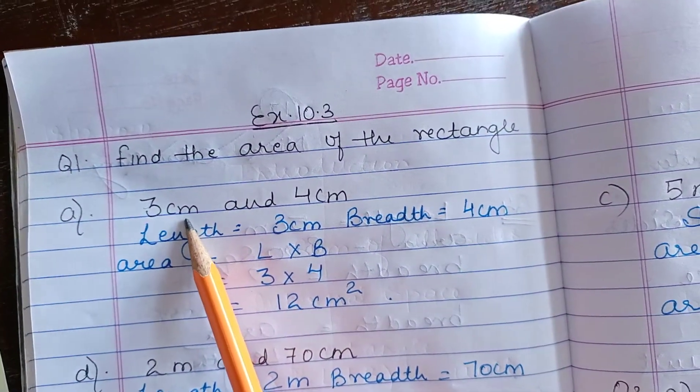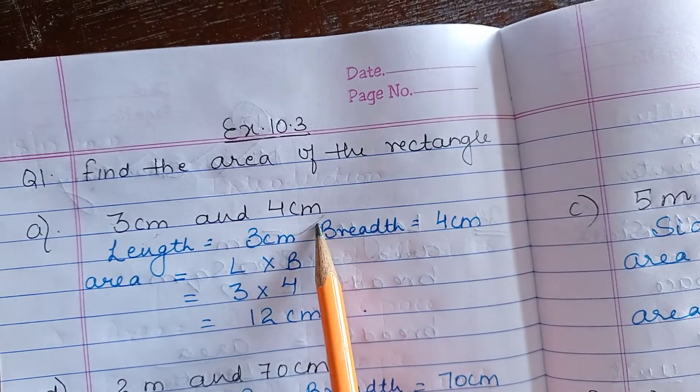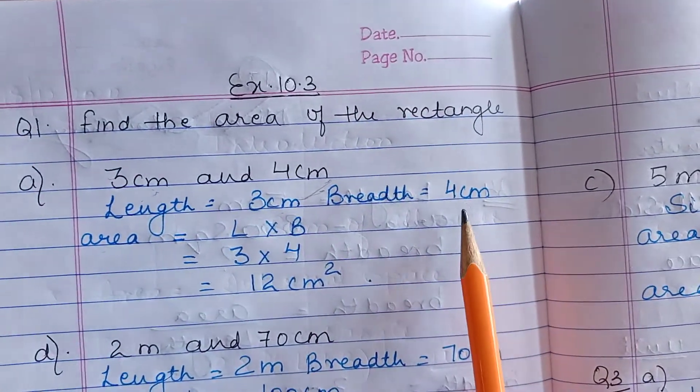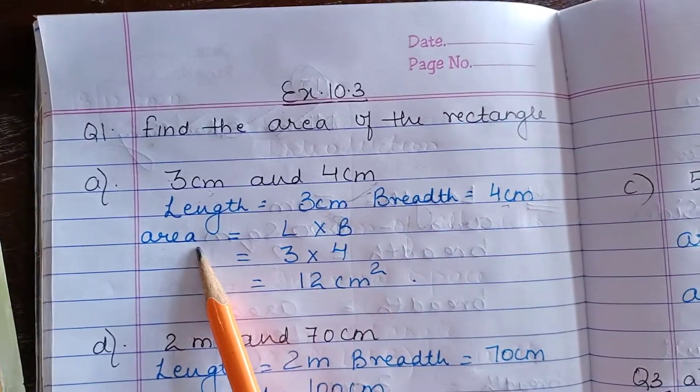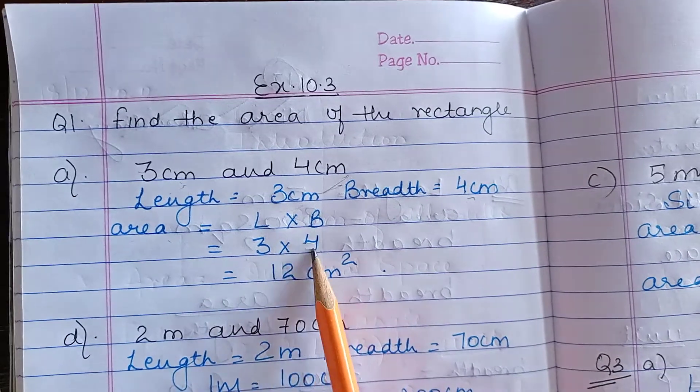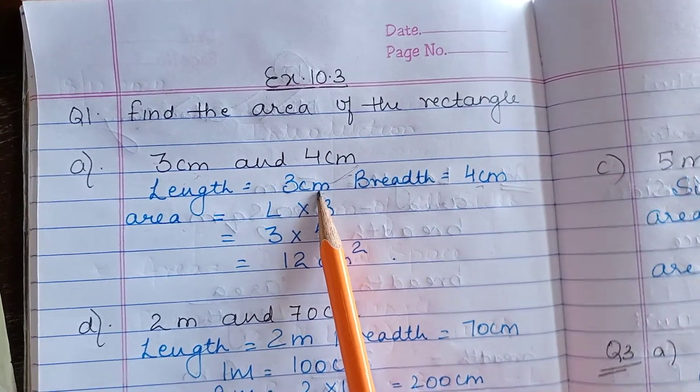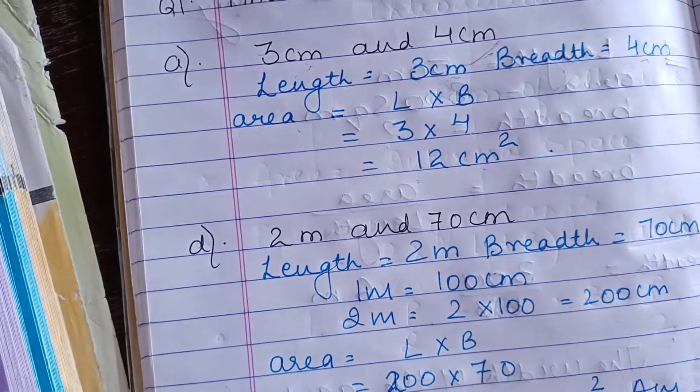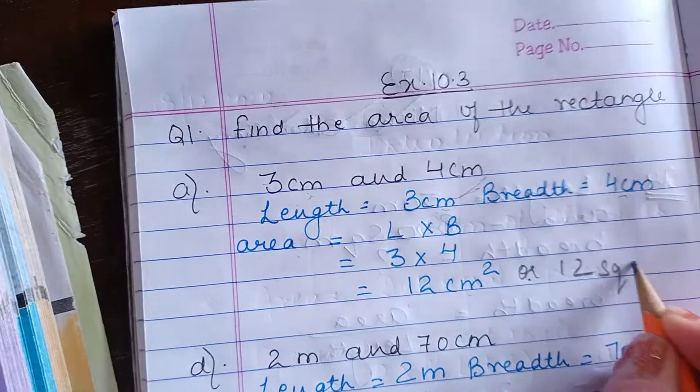First part is 3 cm and 4 cm. These dimensions are given to us, so we are considering 3 cm as length and 4 cm as breadth. The formula for finding the area of a rectangle is length into breadth. So length is 3, breadth is 4, multiply and we will get the answer. 3 times 4 is 12 and we have to specify the unit with our answer also.